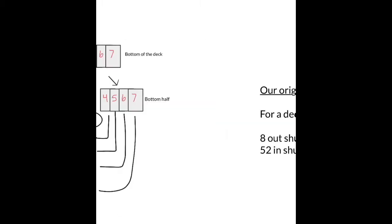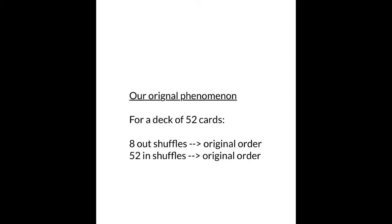Our phenomenon stems from the fact that if you perform eight perfect out shuffles to a deck of fifty-two cards, the deck returns to its original order. Alternatively, it requires fifty-two perfect in shuffles to return a fifty-two card deck to its original order. You may be wondering: why eight, why fifty-two? What happens to these numbers if we change the deck size? Can we use this to predict the movement of cards in a deck? All these interesting questions arise from this phenomenon, but to understand them, we must gain a better mathematical understanding of how the cards move throughout a deck when performing an in or out shuffle.